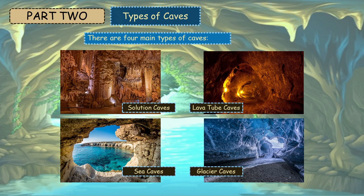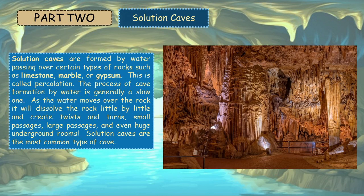There are four main types of caves: solution caves, lava tube caves, sea caves, and glacier caves. Solution caves are formed by water passing over certain types of rock, such as limestone, marble, or gypsum.